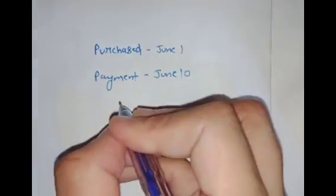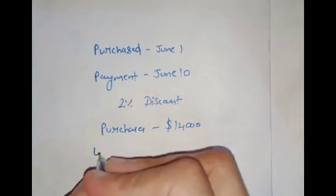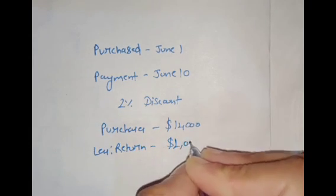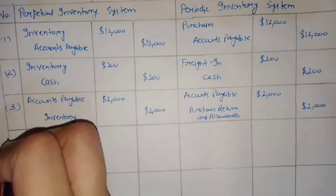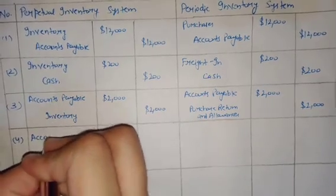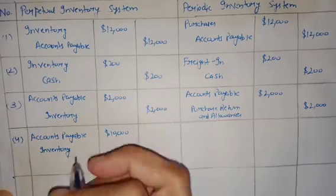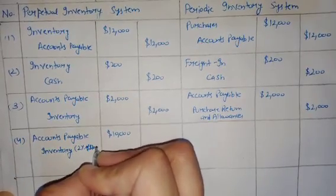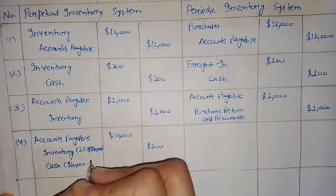Goods were purchased on June 1st and payment was made on June 10th. The payment was made within the discount period, so the buyer will get the benefit of the 2% discount. Goods were purchased for $12,000, out of which goods worth $2,000 were returned, so the net amount due to the supplier is $10,000. The general entry under the perpetual inventory system will be: Accounts Payable debit $10,000, Inventory credit $200 (2% of $10,000), Cash credit $9,800.